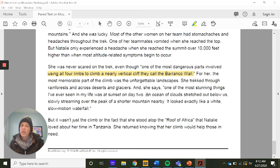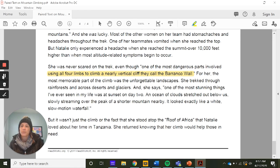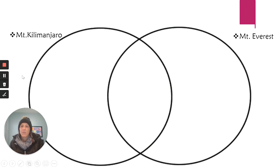Make sure you have paper and pencil ready — you might want a second piece of paper because now we're going to do our Venn diagram and compare. On your paper, create two intersecting circles like I have. One side shows things unique to Mount Everest, the other side shows things unique to Mount Kilimanjaro, and the center shows dangers that could happen on both mountains — or really any mountain you climb.